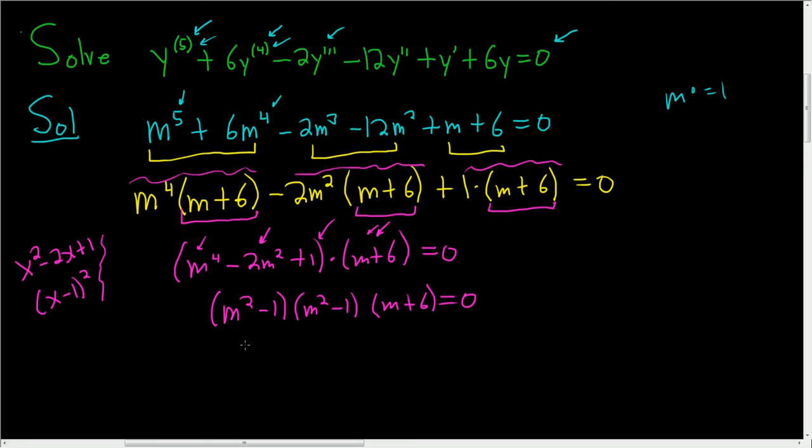Here we have the difference of squares twice. So it's m minus 1, m plus 1, that takes care of this piece, and then we have to do it again for this guy. So m minus 1, and then m plus 1, and then we still have the m plus 6.